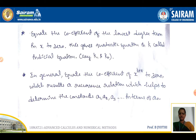In general, equating the coefficient of x^(k+r) to 0 results in a recurrence relation, which helps determine the constants a1, a2, a3, etc., in terms of a0.